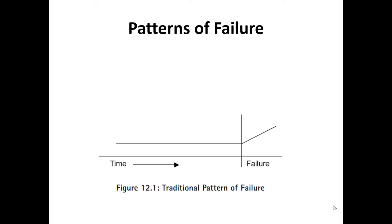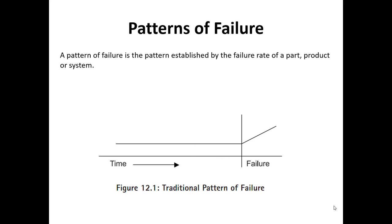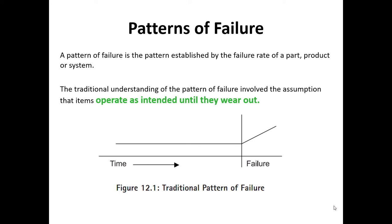If you look at your observations and testing, you would assume you'd have a graph where the product fails over time — that is called a traditional pattern of failure. That's what the layman would assume: that any new product you buy will work fine until the end, and then it will start to fail. Pattern of failure is the pattern established by the failure rate of a part, product, or system, and the traditional understanding involves the assumption that items operate as intended until they wear out.